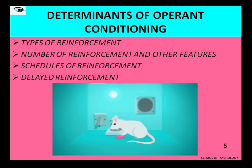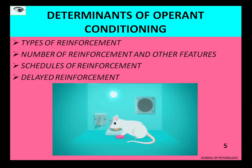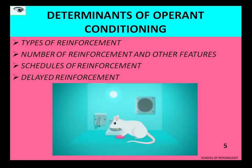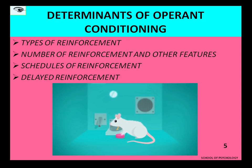Hello everyone. Our topic for today is operant conditioning. Operant or instrumental conditioning is that form of learning which makes use of reinforcement or punishment to either increase or decrease behavior. In this form of learning, behavior can be learned, maintained, or even changed through its consequences.